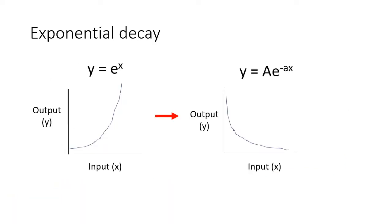The natural exponential function is modified in order to model exponential decay. e to the x becomes e to the minus x, which flips the curve upside down. The x is multiplied by a coefficient little a, which determines how spread out the function is along the x-axis. The entire function is multiplied by a coefficient big A, which determines how spread out the function is along the y-axis.